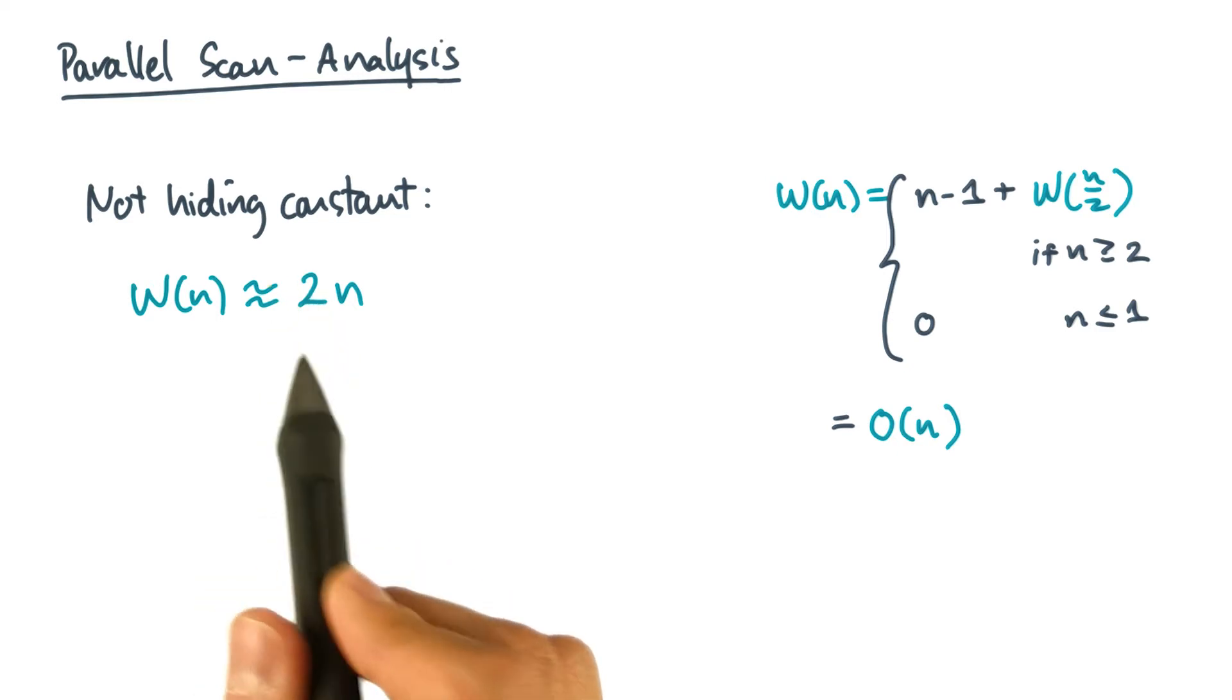Now this factor of 2 is pretty interesting. Think about what that means for a sec. The purely sequential algorithm only has a constant of about 1. So evidently, our parallel algorithm does twice the work.